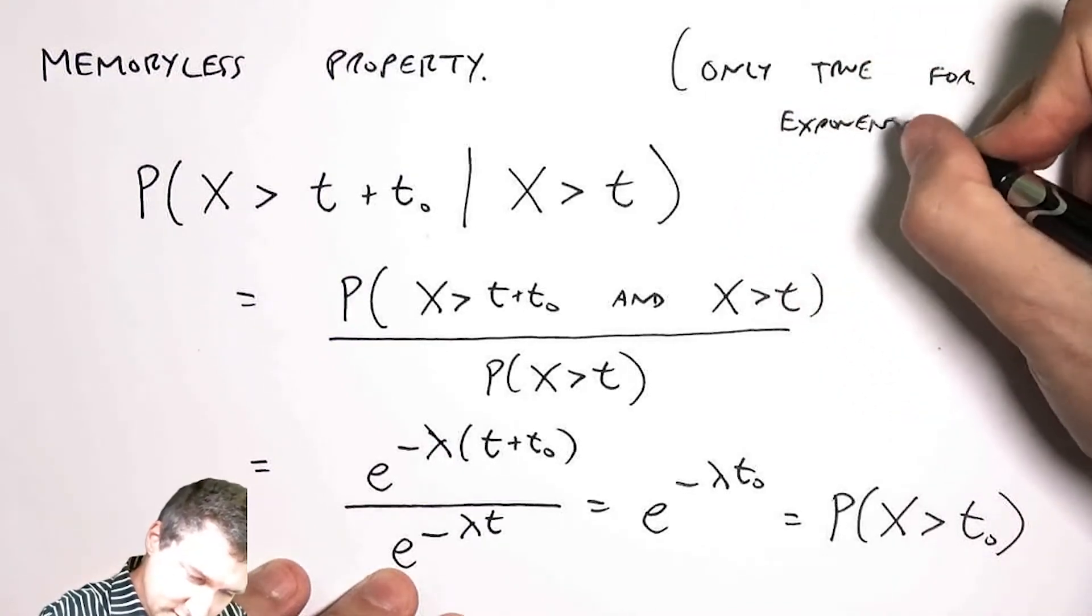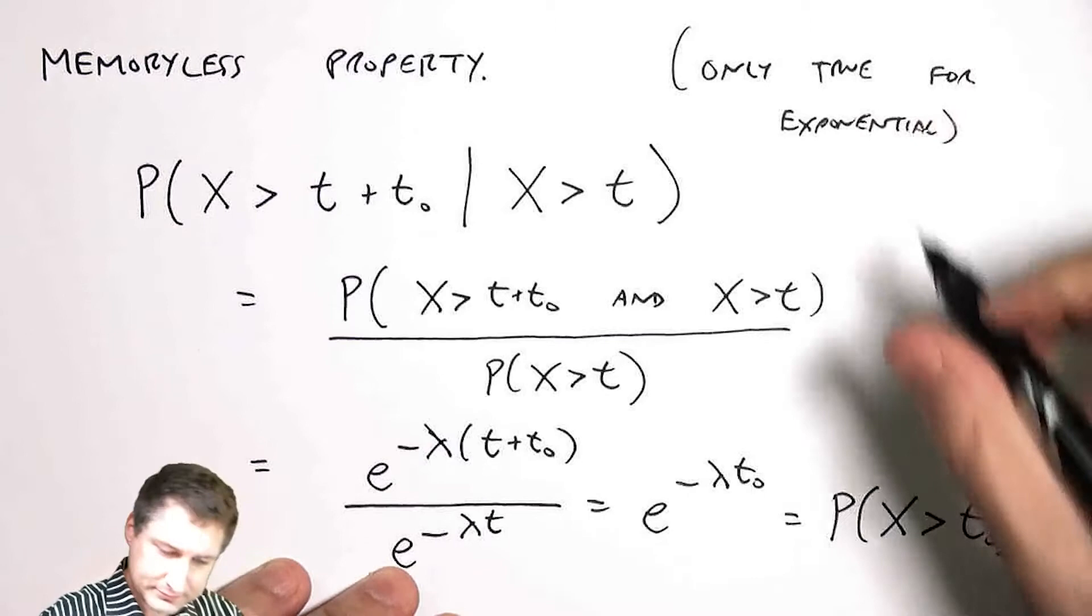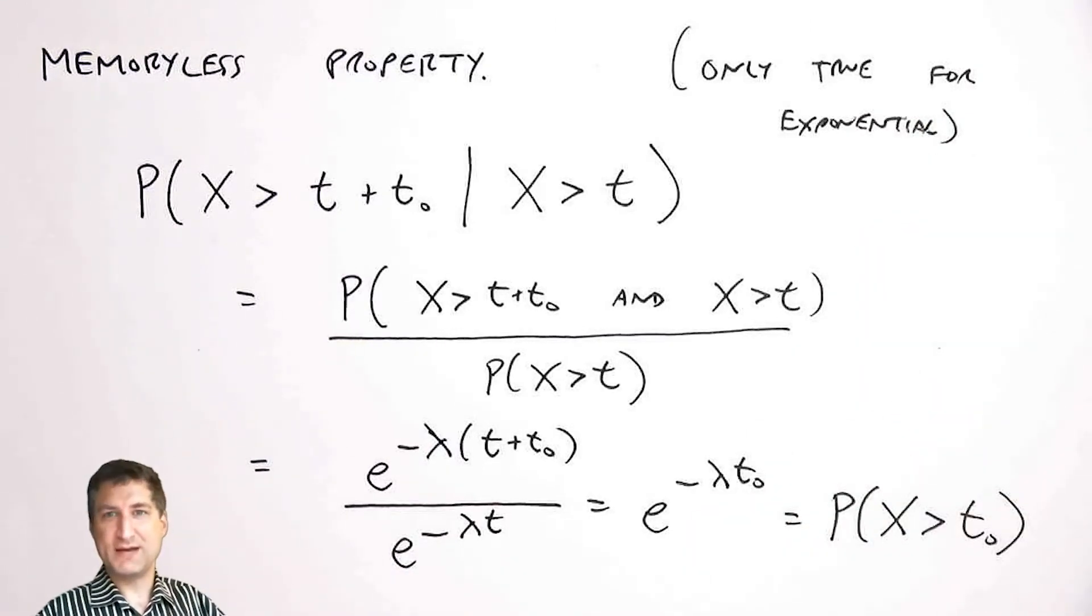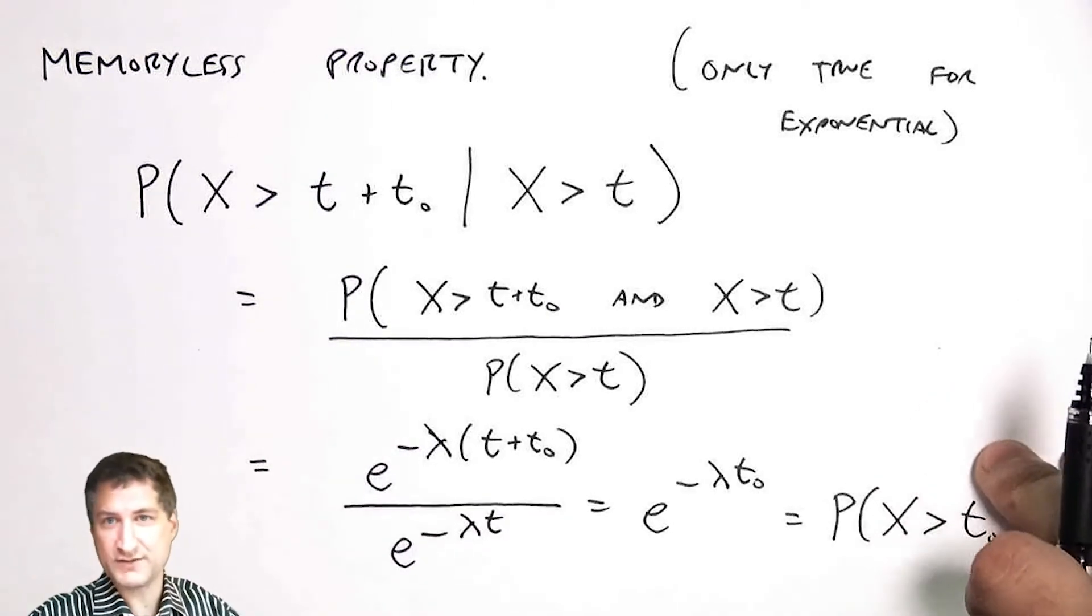This is another example of I defined a CDF and a PDF and that basically gave me a new random variable. There are a bunch of other continuous random variables that we're not going to talk about too much in this class.